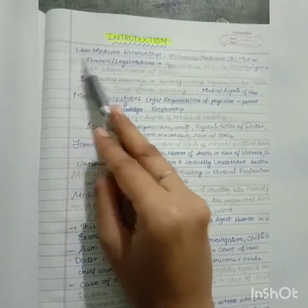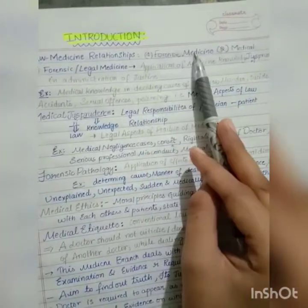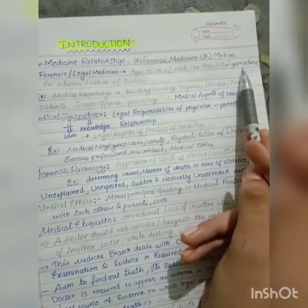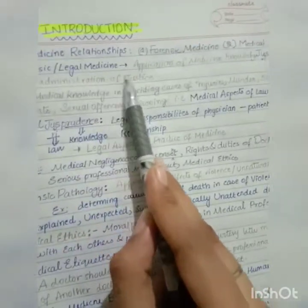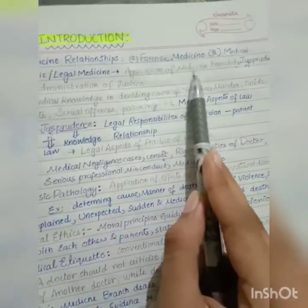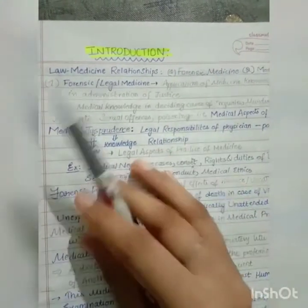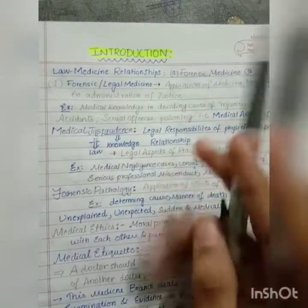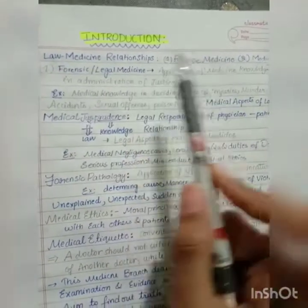Today we are going to start the introduction of forensic medicine. The relationship between law and medicine is called forensic medicine. What is forensic or legal medicine? It is the application of medical knowledge in the administration of justice — the knowledge of medicine applied in the legal system.